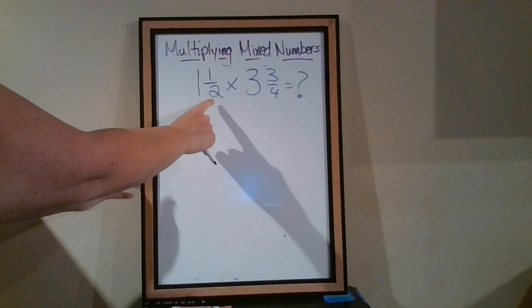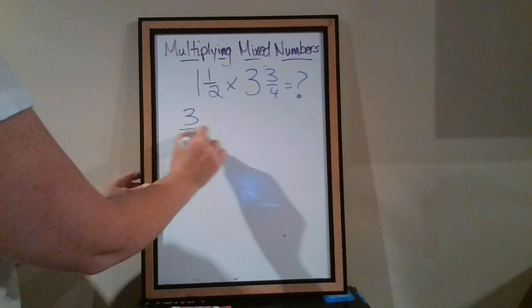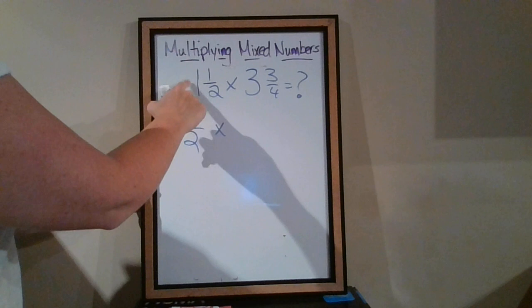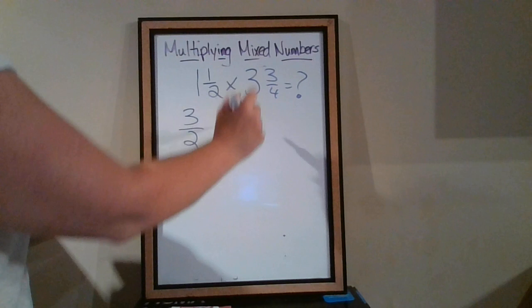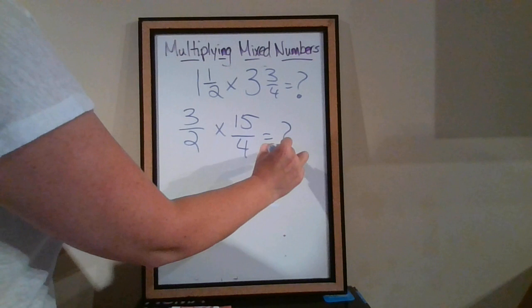So we do 2 times 1 is 2 plus 1 is 3. We're still dealing with halves, so it's over 2. 1 and 1 half is equal to 3 halves. And then we want to do 3 and 3 quarters into a fraction as well. 4 times 3 is 12, 12 plus 3 is 15. And it's still quarters. The denominator does not change.